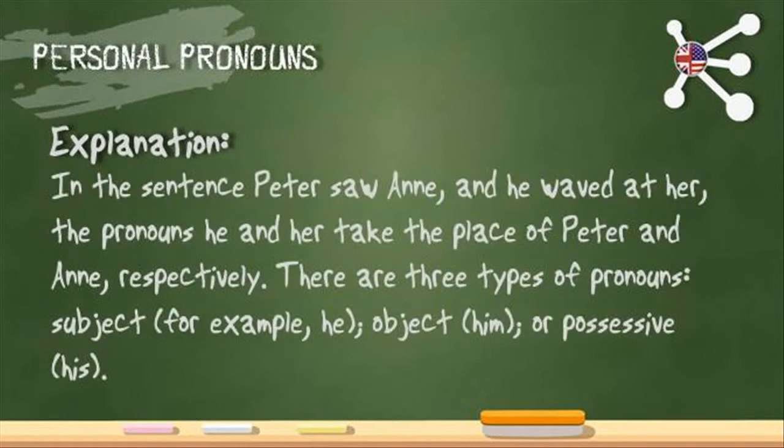In the sentence 'Peter saw Ann and he waved at her,' the pronouns 'he' and 'her' take the place of Peter and Ann, respectively.